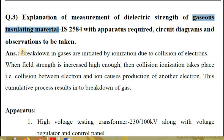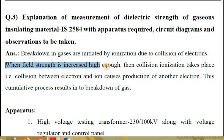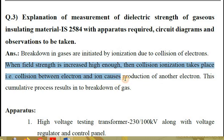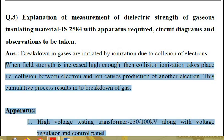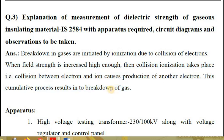We know that breakdown in gases is initiated by ionization due to collision of electrons. When the field strength is increased high enough, collision ionization takes place — that is, collision between the electron and ion causes production of another electron. This cumulative process results in the breakdown of the gases.